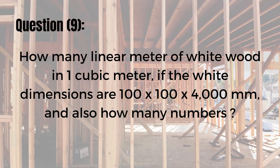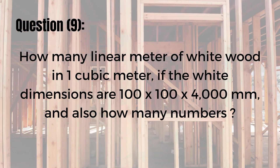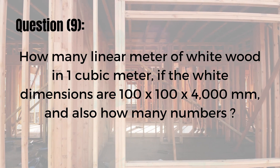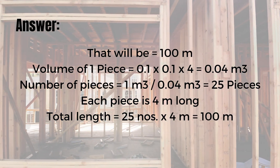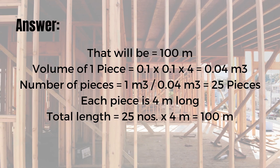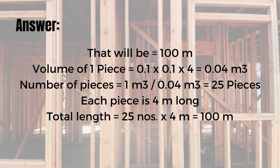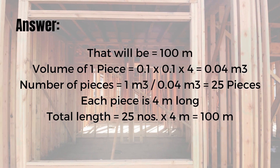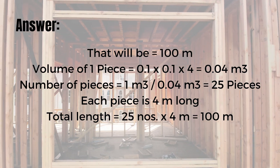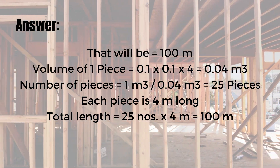Question number nine: how many linear meters of white wood are there in one cubic meter, if the white wood dimensions are 100 by 100 by 4000 millimeters? And how many pieces will there be in one cubic meter? The answer is 100 linear meters. First, calculate the volume of one piece: 0.1 × 0.1 × 4 = 0.04 cubic meters. The number of pieces equals 1 cubic meter divided by 0.04, which is 25 pieces. Each piece is 4 meters long, so 25 × 4 = 100 linear meters.